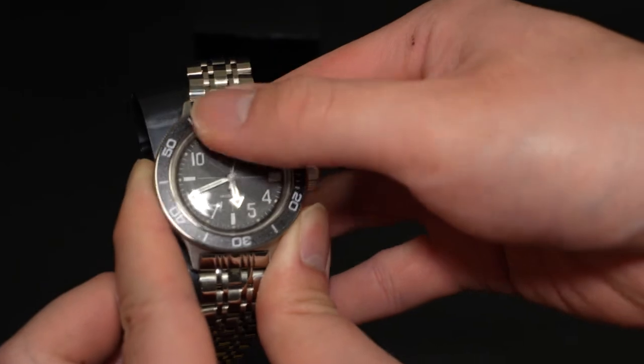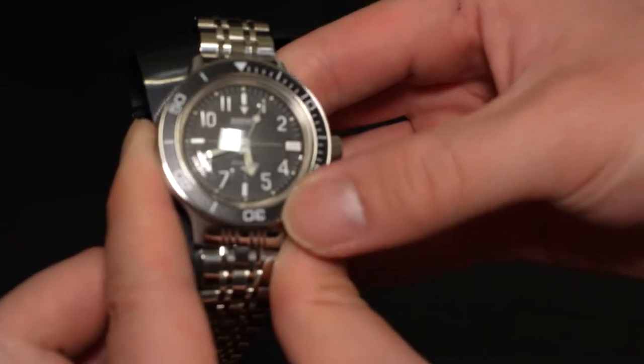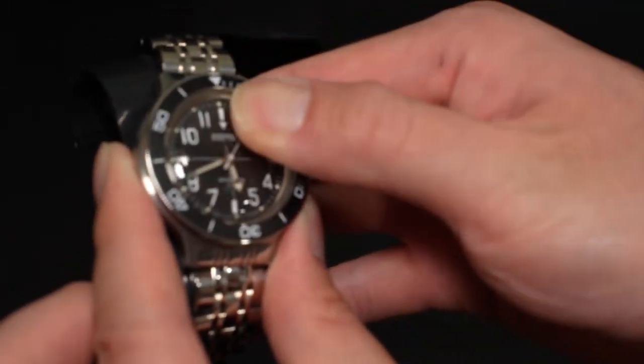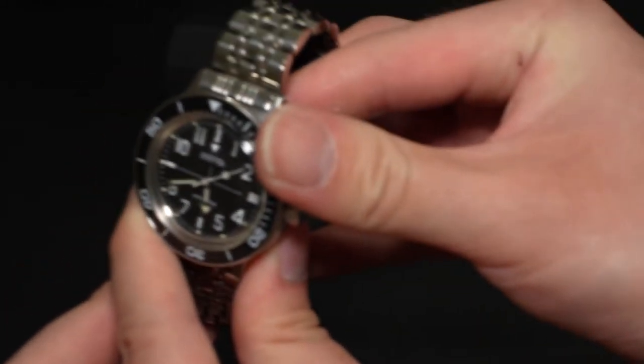Now, the protective film you just installed will keep all the scratches off the crystal of the watch. And even if the TPU film gets scratched, it buffs out really easy.